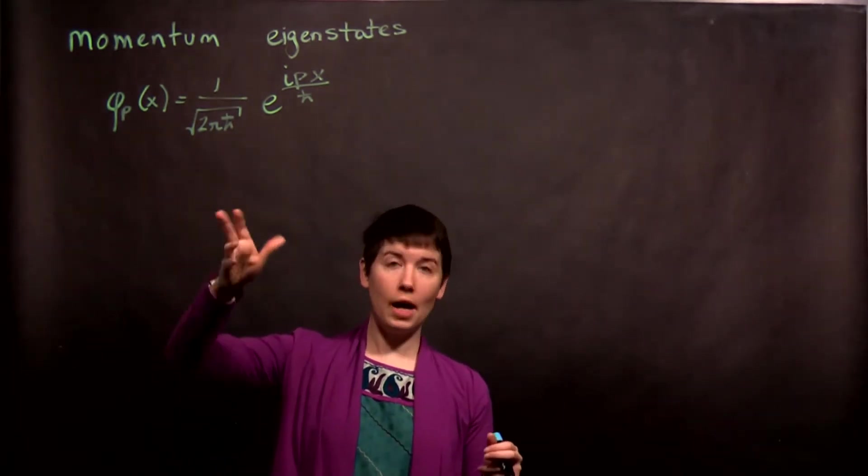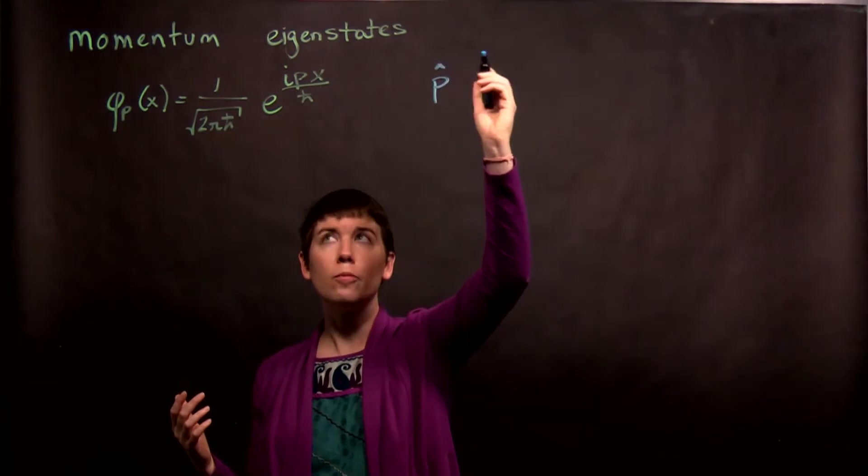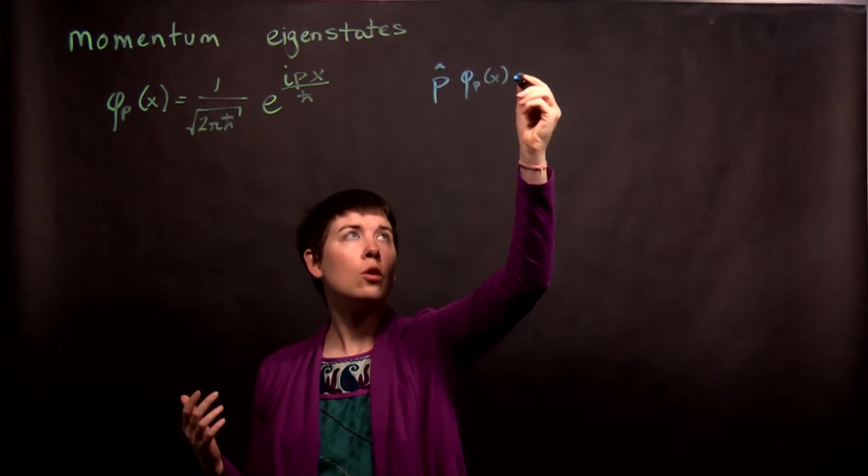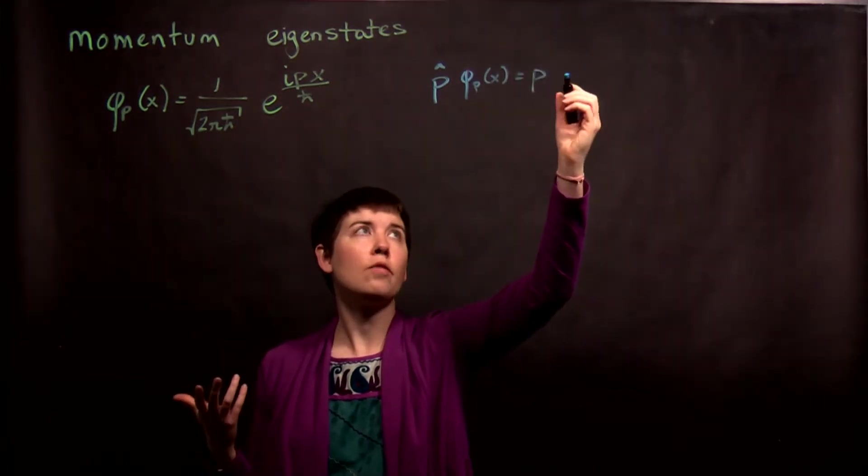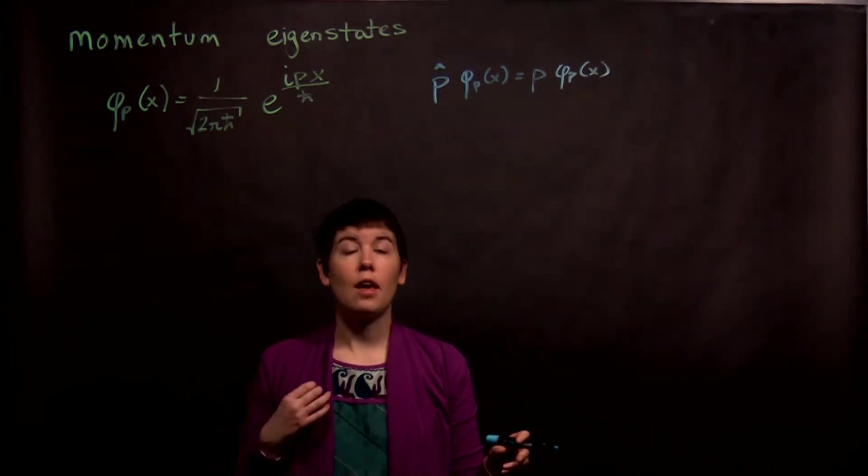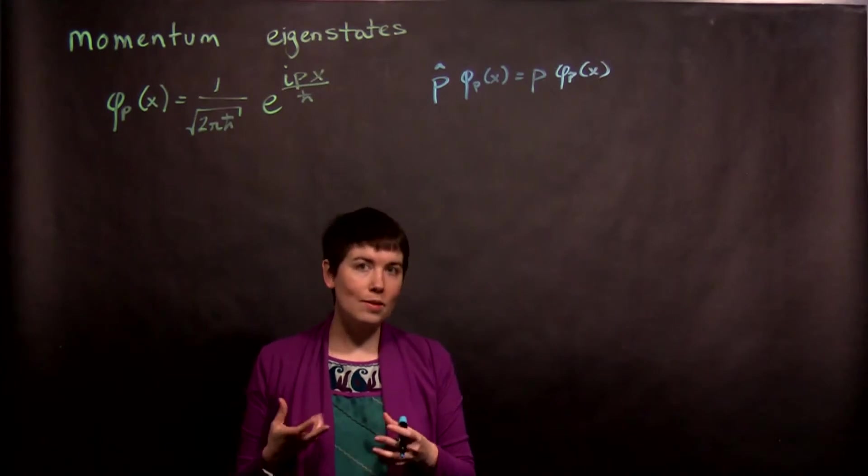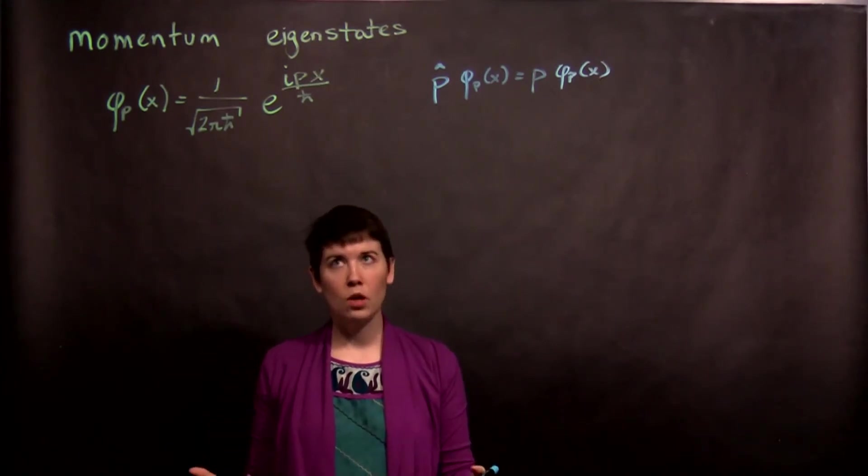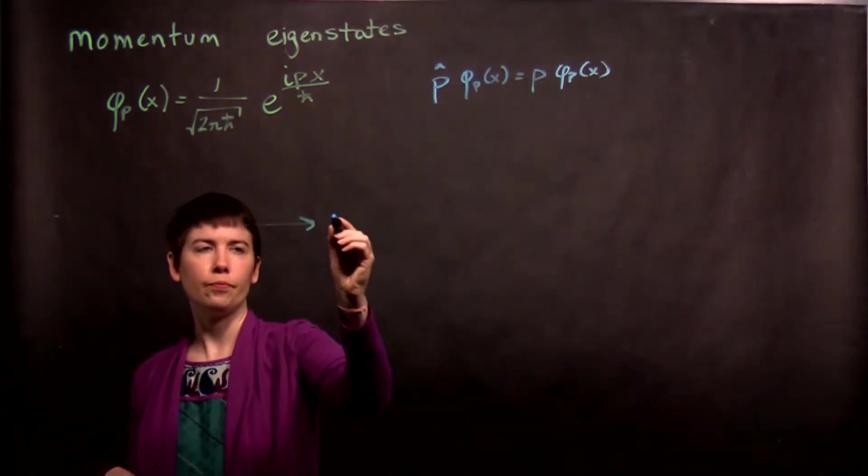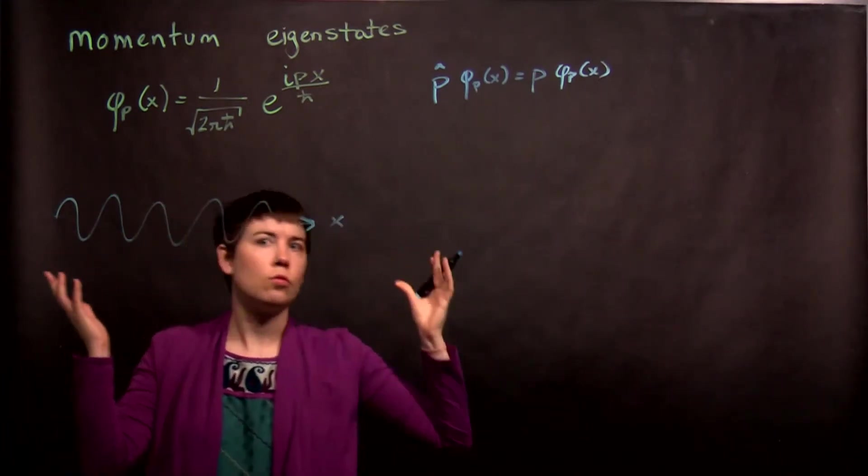So first, we have our momentum eigenstates, these satisfy the idea of saying that my momentum operator applied to this function will give me the momentum of that function times that function back. But now notice that we're writing this as a function of position. What does that look like in position space? You could imagine this as basically saying, okay, I have position, what does this look like? Some sort of wave.